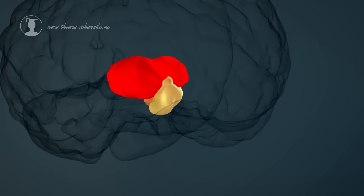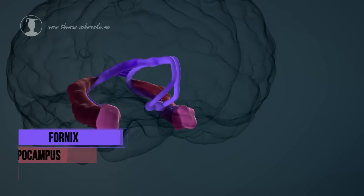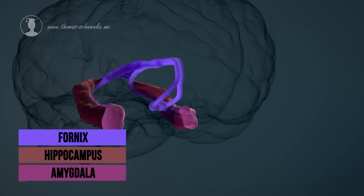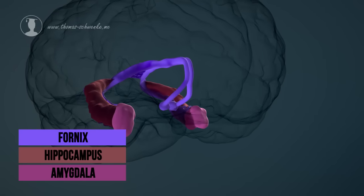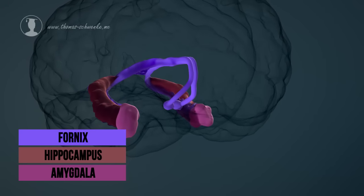The hypothalamus also controls our thirst and hunger. The limbic system lies deep in the cerebrum and consists of the hippocampus, the amygdala, and the fornix with the mammillary bodies at the front end.